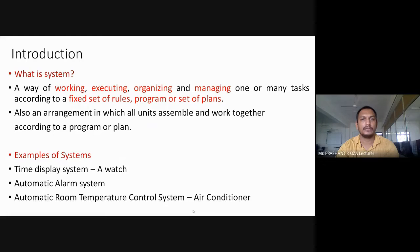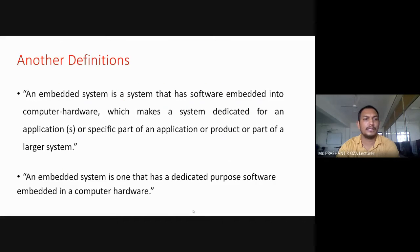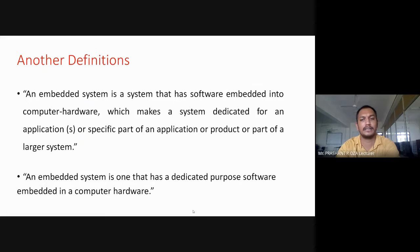In embedded systems, there are lots of examples. The first example is a time display system — a watch is a simple system. Another is an automatic alarm system. Next is an automatic room temperature control system, like AC. An embedded system is a system that has software embedded into computer hardware, which makes a system dedicated for an application or specific part of an application, product, or part of a larger system. Another definition: an embedded system is one that has dedicated purpose software embedded in computer hardware.